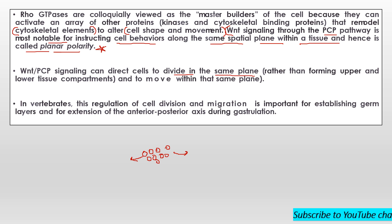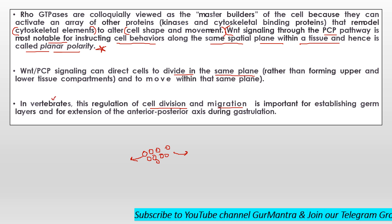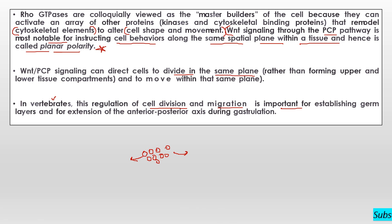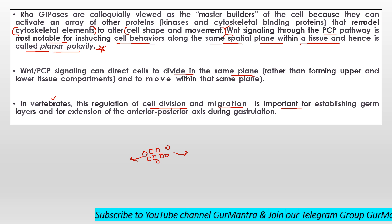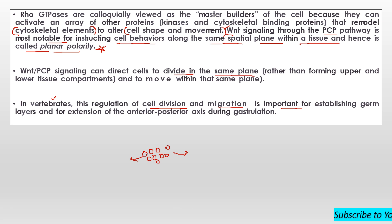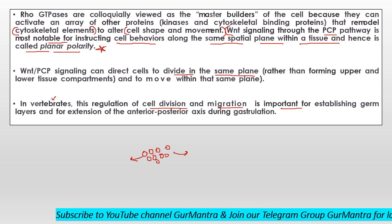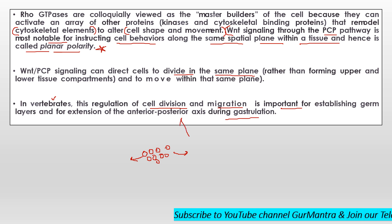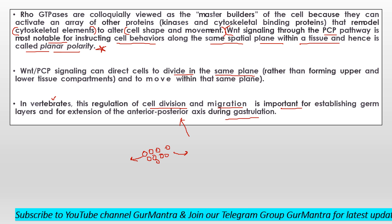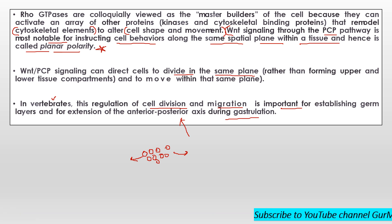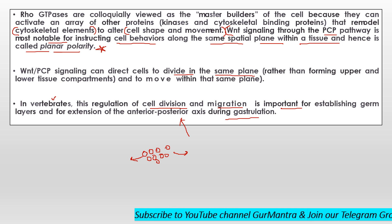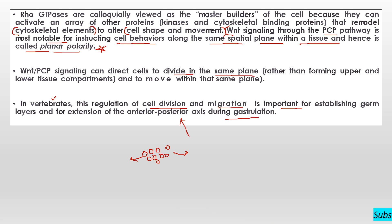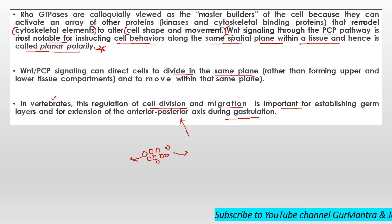In the case of vertebrates, regulation of cell division and migration is an important aspect. Germ layers — ectoderm, endoderm, mesoderm — are also brought in through gastrulation, where you study different types of cell movements: ingression, involution, epiboly, delamination. Cells move and specific germ layers form. Not only this, extension of the AP axis during gastrulation also involves an important role of cell division and migration. This is studied in avian/chick development, where you see the formation of the primitive streak, and the AP axis is also defined from there.